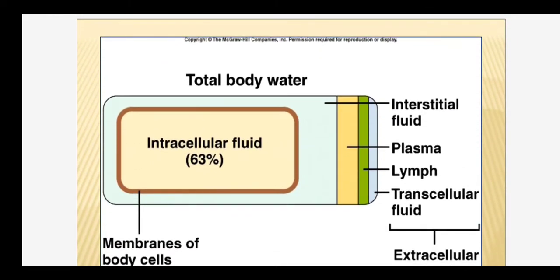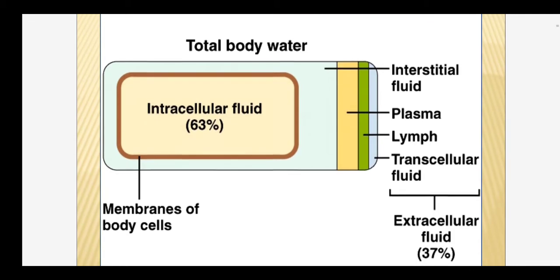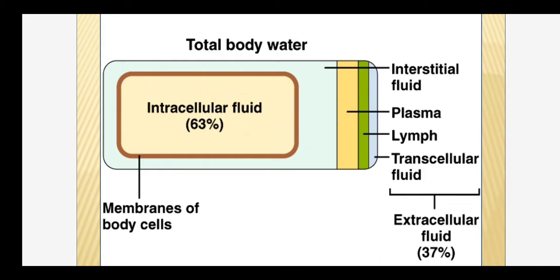Another diagram also shows that intracellular fluid is around 63–65% and extracellular fluid is 35–37%. If we divide the extracellular fluid, you can see that interstitial fluid is in the largest quantity, after that comes plasma, then lymph, then transcellular fluid.